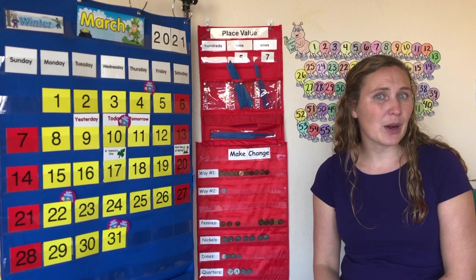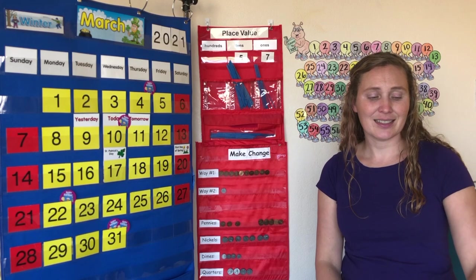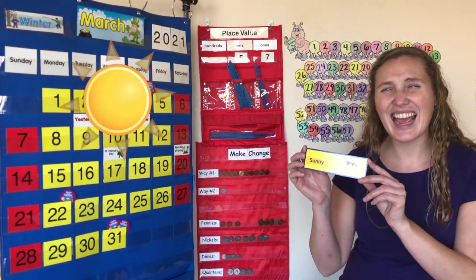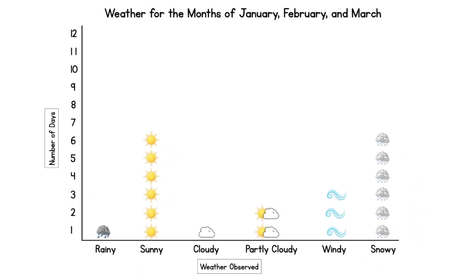What's the weather like where you are today? I'm having another sunny day. Let's add sunny to our pictograph. I'm drawing another sun above sunny. That's seven sunny days of calendar time we've had in January, February, and March. We've had more sunny days than any other type of weather.